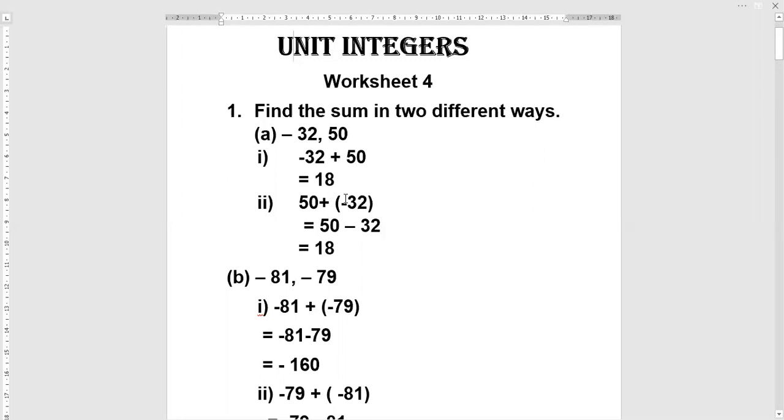Then we change the order. We write 50 at first and then we write minus 32. 50 plus minus 32 equals 50 minus 32. That is equal to 18.